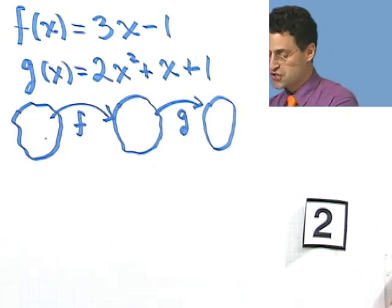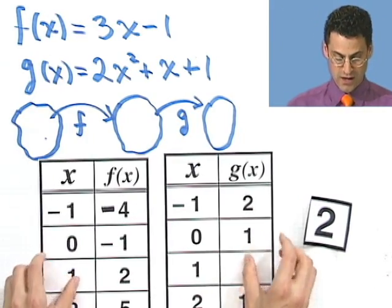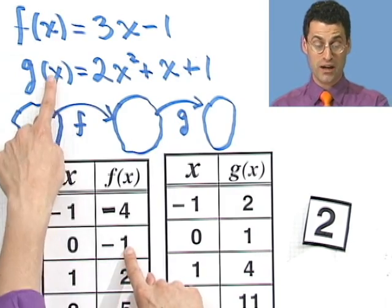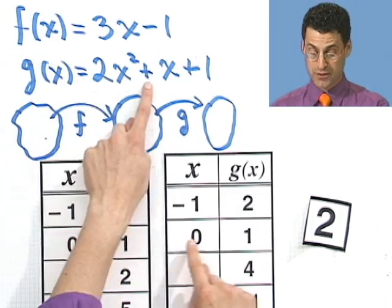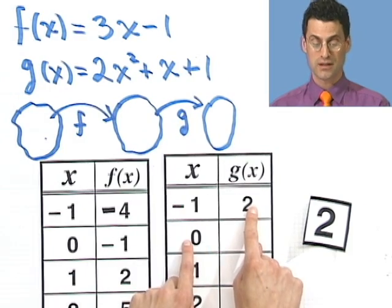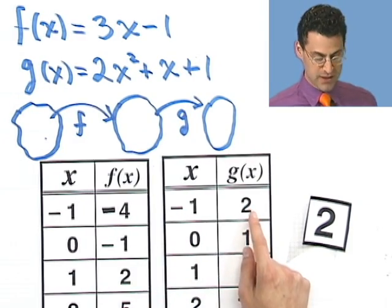And again, you can see that on the chart, I started with 0. That gave me a minus 1. And then I took the minus 1 and put it into this function. And when I plugged away, I got the 2.